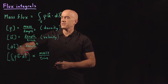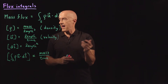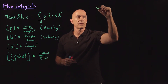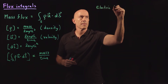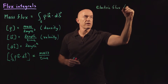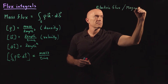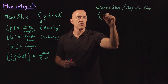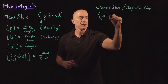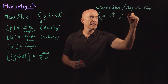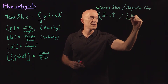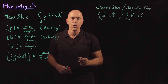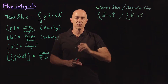That's in the context of fluid mechanics. We also have, in the context of electricity and magnetism, both the electric flux and the magnetic flux. These flux integrals are the integral over the surface of the electric field dot dS, and the magnetic flux is the integral over the surface of the magnetic field dot dS. These quantities show up in the integral form of Maxwell's equations.